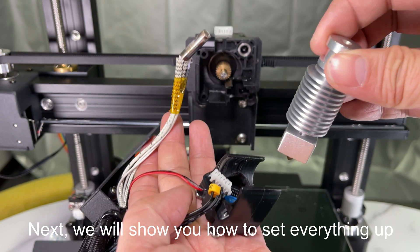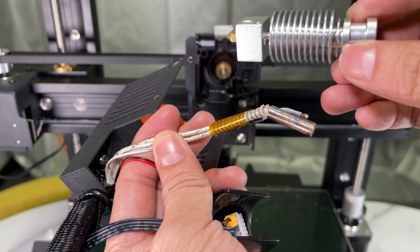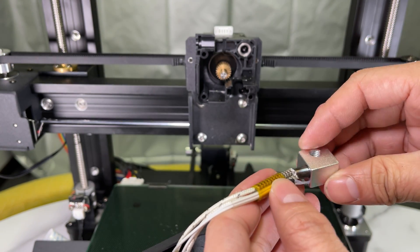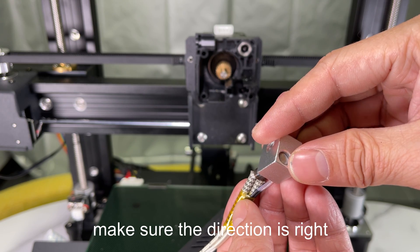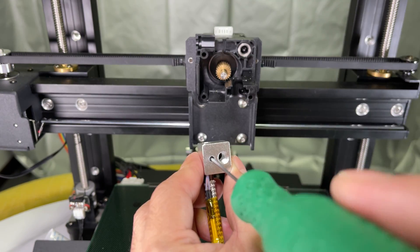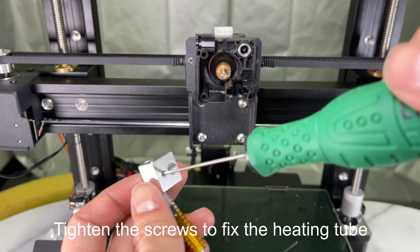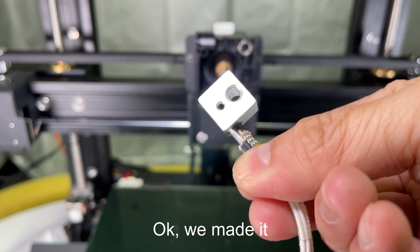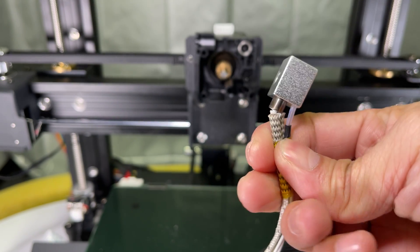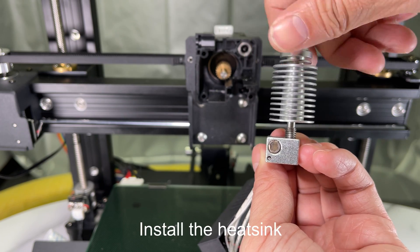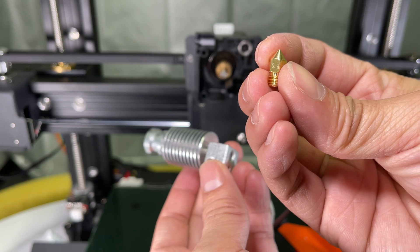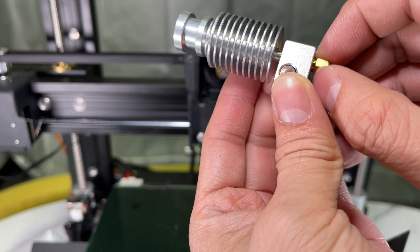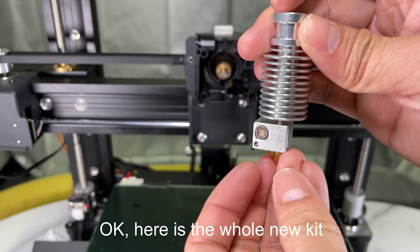Next, we will show you how to set everything up. First, install the heating tube and the thermistor. Make sure the direction is right. Tighten the screws to fix the heating tube. Okay, we made it. Install the heatsink. Install the nozzle. Okay, here is the whole new kit.